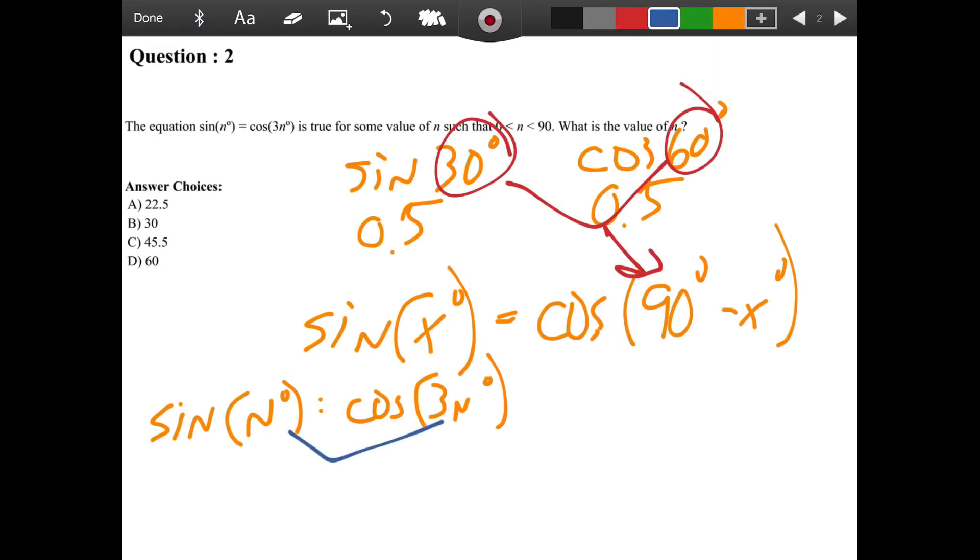So the same thing applies for this problem. So we have n degrees plus 3n degrees. We know, based on our rules, that that has to add up to 90. So if we solve this, n plus 3n is 4n equals 90. Divide both sides by 4, 90 divided by 4, boom, n equals 22.5.